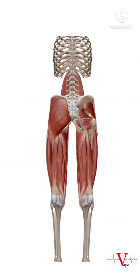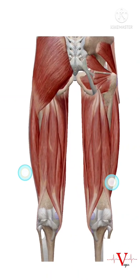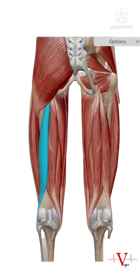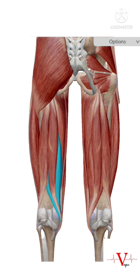Let's have a look at the muscles present in the posterior thigh, or the back of the thigh. This is your biceps femoris, this is your semitendinosus, and this is your semimembranosus.